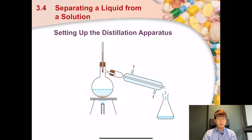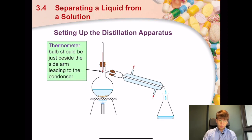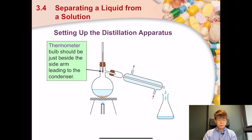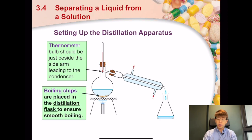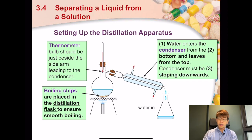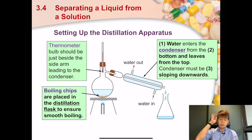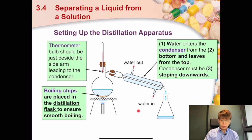For the lab setup, we have a thermometer positioned right next to the condenser. We also have boiling chips to ensure smooth boiling. The condenser provides a cool surface for condensation to occur. Remember that water must go in from the bottom and come out from the top.